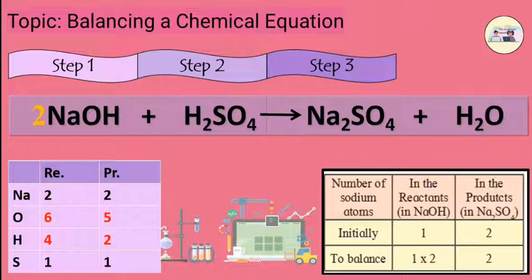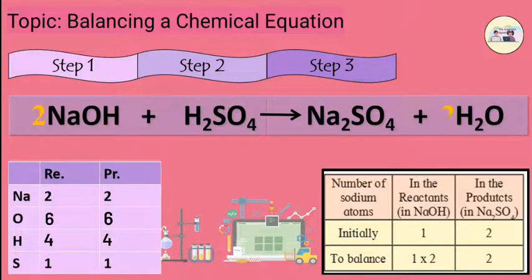Now, check whether the equation is balanced or not. We observe that the equation is still not balanced as the number of atoms of hydrogen is not equal. So, applying a factor of 2 to the equation, we get 2NaOH plus H2SO4 gives Na2SO4 plus 2H2O. Equation 3.